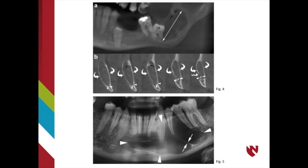Figure 4 shows another OKC in the posterior mandible; however, this lesion is multilocular. Figure 4, part B, shows cross-sectional CBCT scans through the lesion. Figure 5 shows a rather large multilocular OKC located in the mandible that is well-defined and corticated.